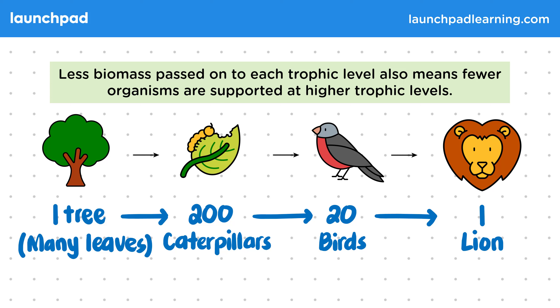This biomass loss is the reason that it's very rare to see food chains longer than 4 or 5 trophic levels.